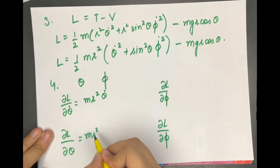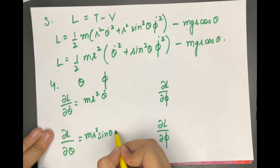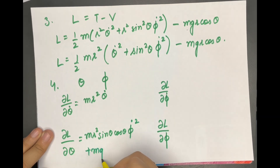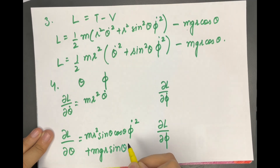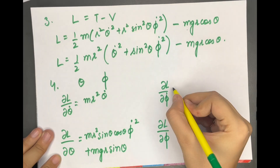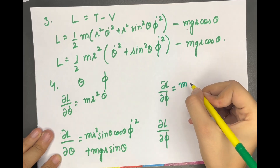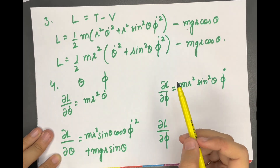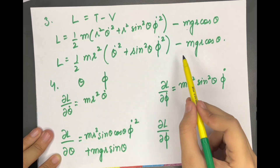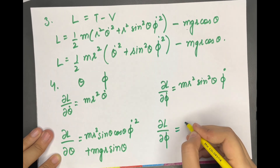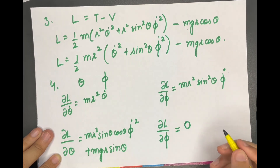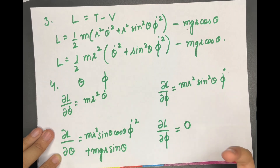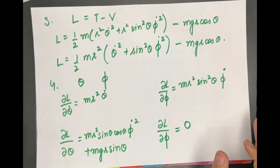∂L/∂θ = mr² sinθ cosθ φ̇² + mgr sinθ. Check this yourself. ∂L/∂φ̇ = mr² sin²θ φ̇. And since L does not contain φ explicitly, ∂L/∂φ = 0. You will later learn that a coordinate not appearing in L is called a cyclic coordinate — I'll teach you about that later.